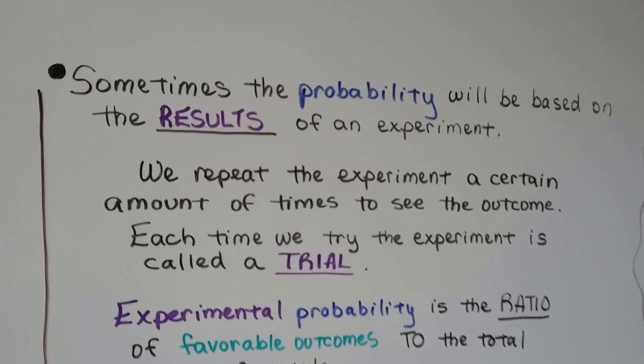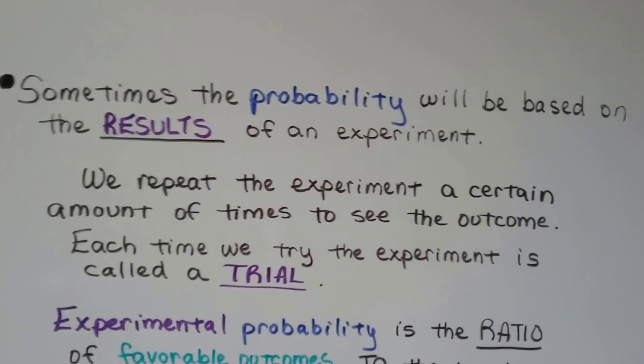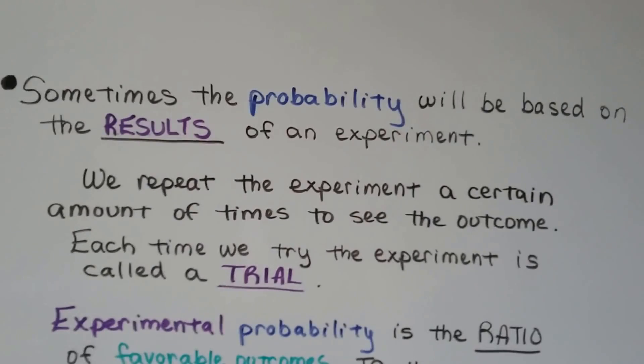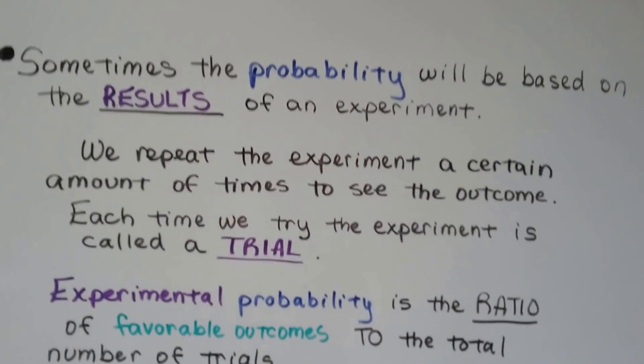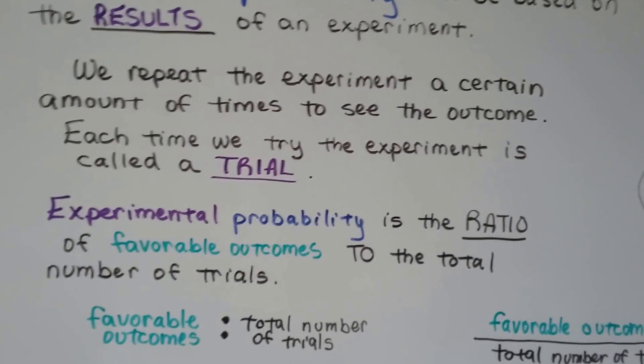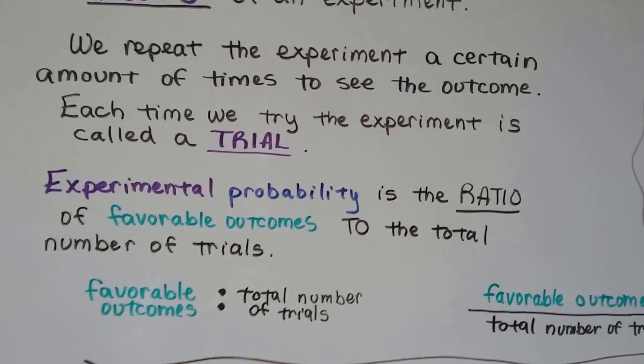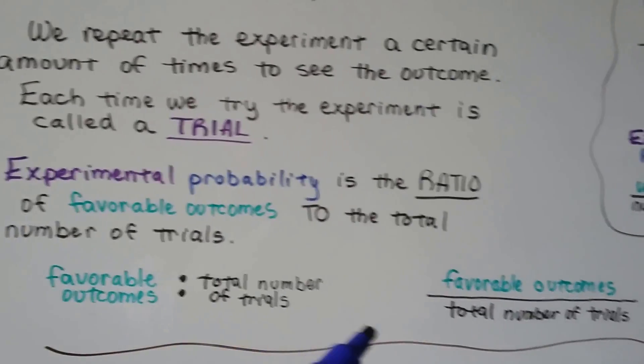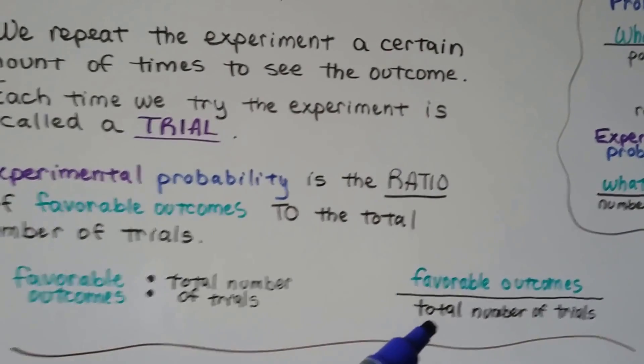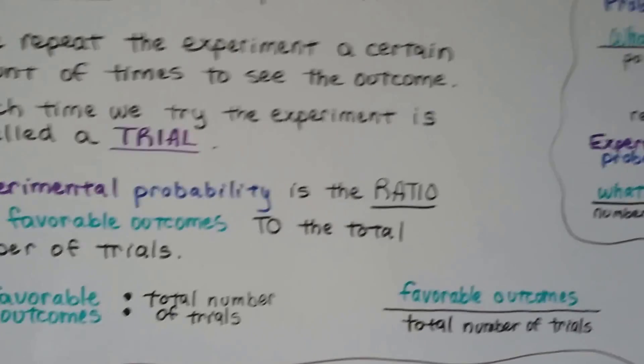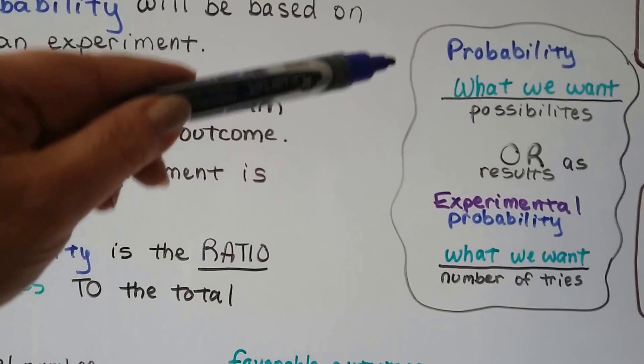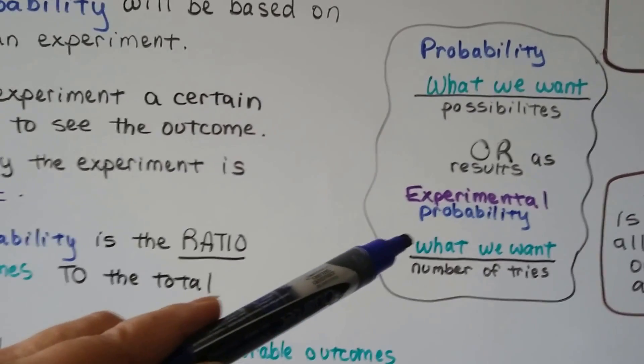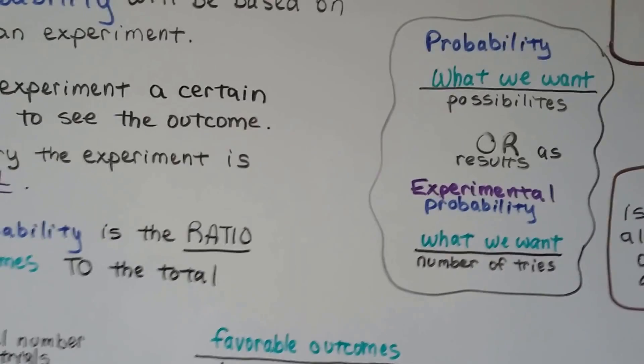Now, sometimes the probability will be based on the results of an experiment. And we repeat the experiment a certain amount of times to see the outcome. And each time we try the experiment, it's called a trial. Experimental probability is the ratio of favorable outcomes to the total number of trials. How many times we tried. That's the ratio. Or as a fraction, it's the favorable outcomes over the total number of trials. So here's the difference. The probability, just the simple probability, is what we want over the possibilities. Experimental probability is what we want over how many times we tried to get it.